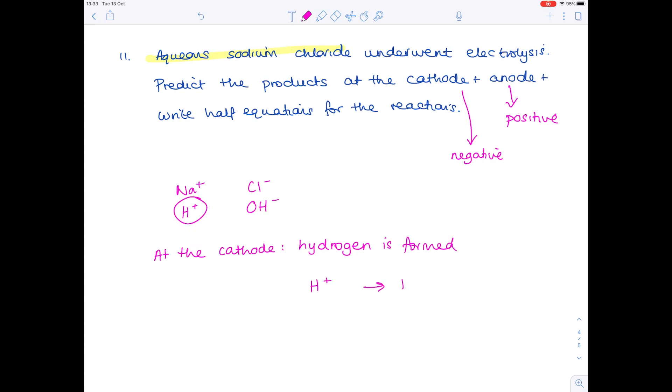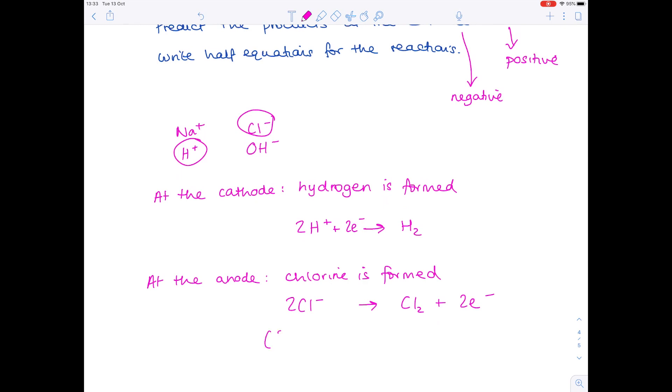Now at the anode, picking between chloride ions and hydroxide ions. Remember that the halogen always discharges preferentially, which is why chlorine is the answer. Again, chlorine is diatomic. Make sure you've balanced. That is your final answer. For the second equation, you could have also written this. Both are acceptable.